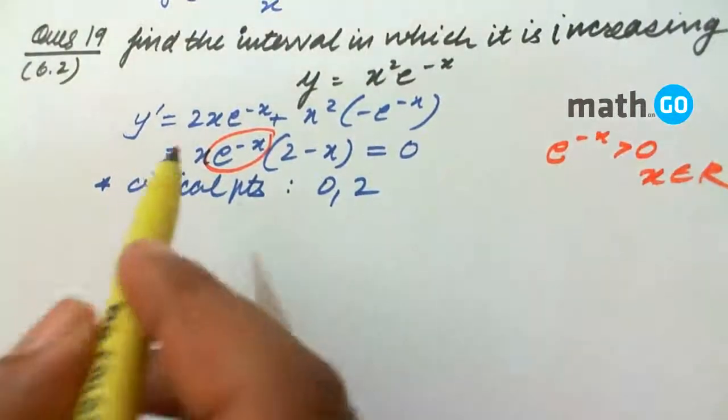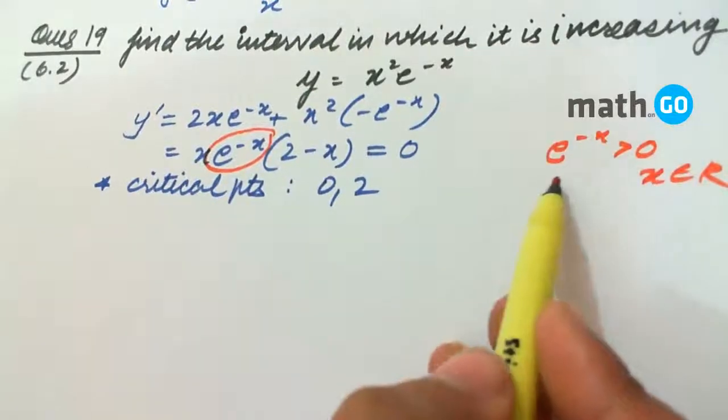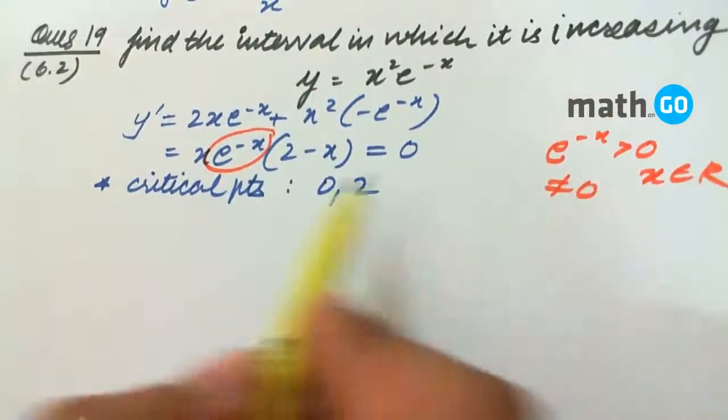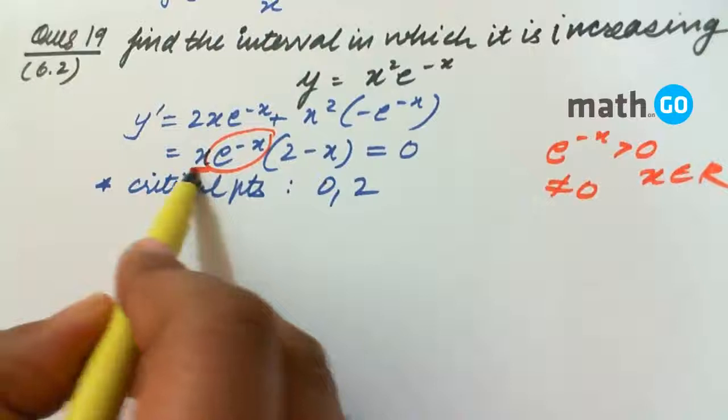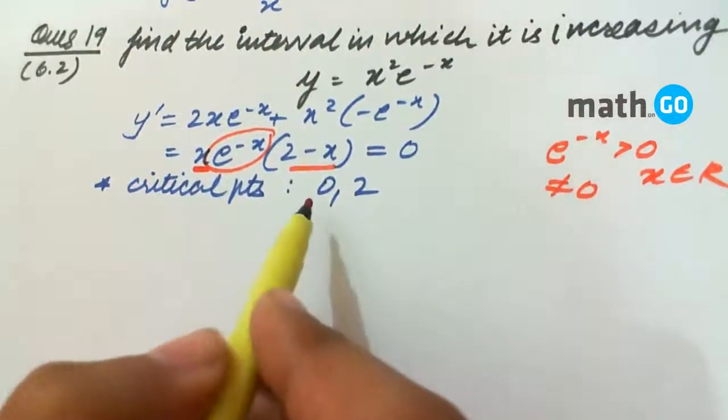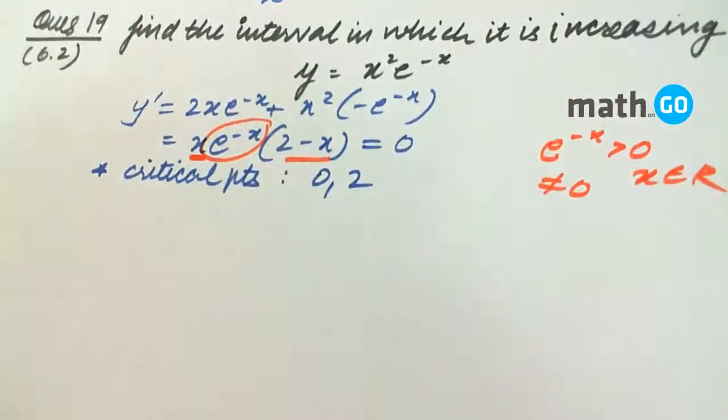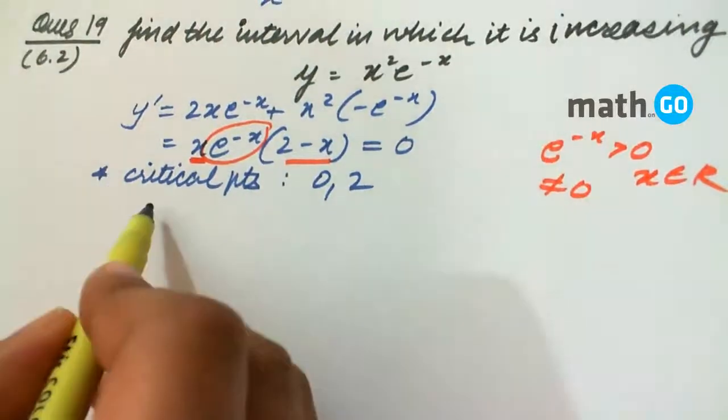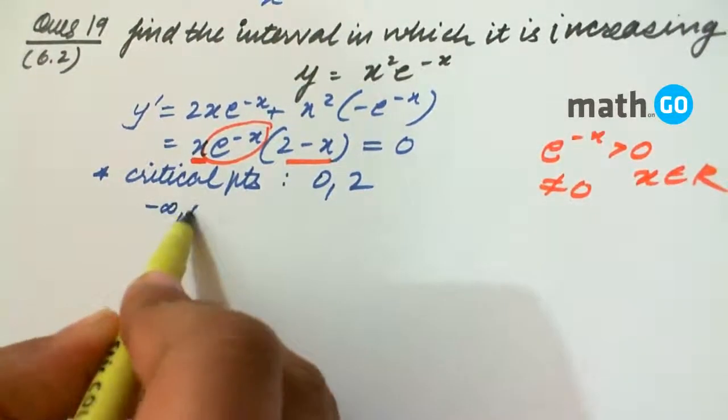That is why we won't consider it, and this is never equal to 0. So critical points will only include x=0 and x=2. We get our intervals as (-∞,0), (0,2), and (2,∞).